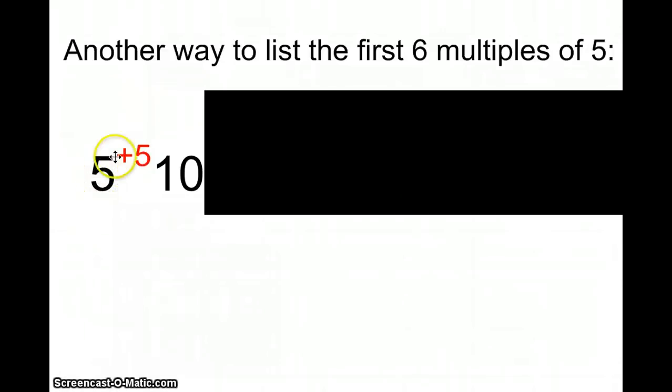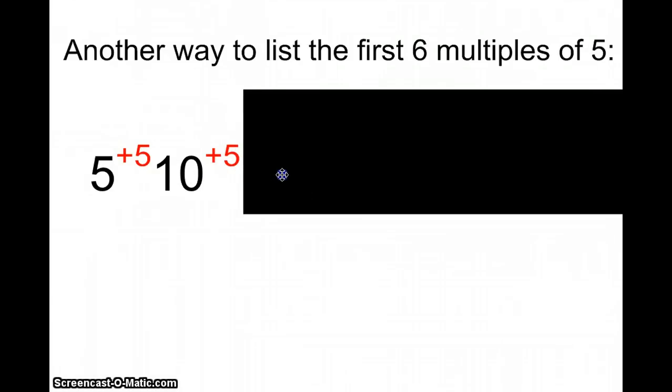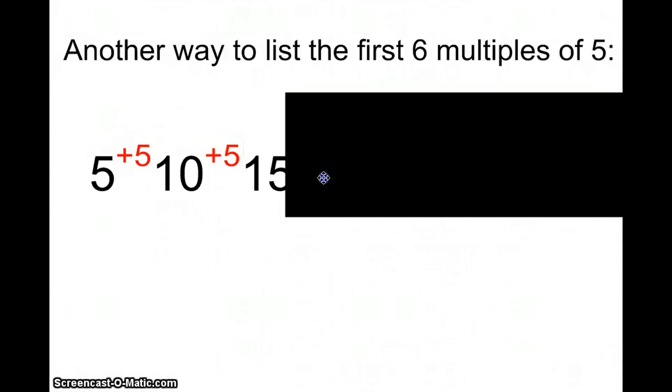So 5 is the first multiple, 10 is the second multiple. To get the third multiple, I would add another 5, and 10 plus 5 equals 15, which gives me the third multiple of 5.